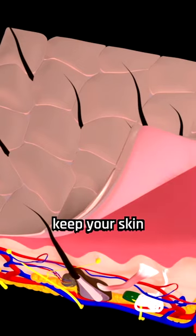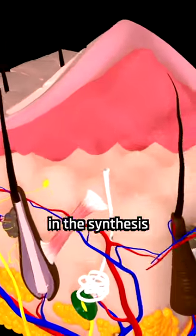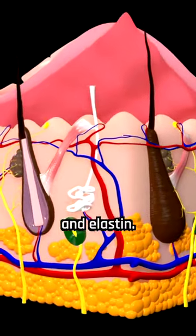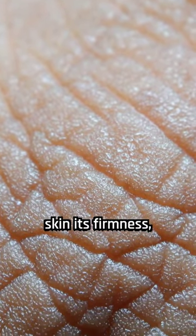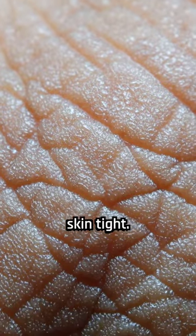Iron also helps keep your skin and hair healthy by being involved in the synthesis of collagen and elastin. Collagen is a protein that gives skin its firmness, while elastin keeps your skin tight.